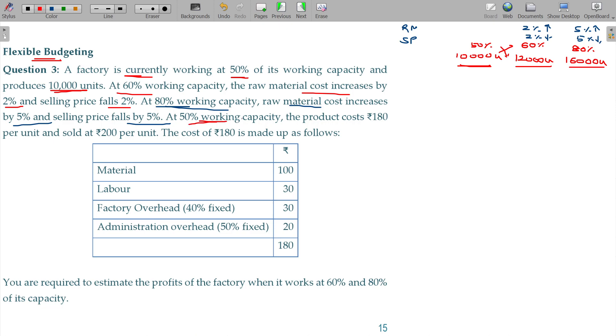Now at 50% working capacity, the product cost is 180 per unit and sold for 200 per unit. So at 50% manufacturing and sales price is 200 per unit. You have to find out what is the cost for 180 per unit. The cost is made up this way: material,